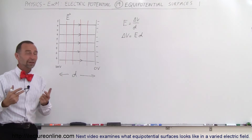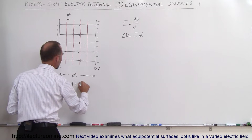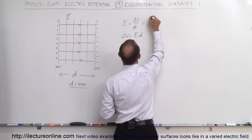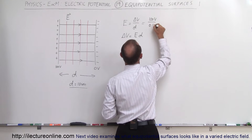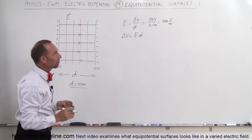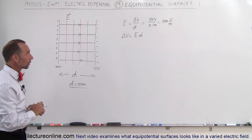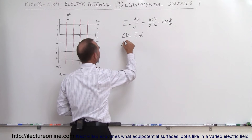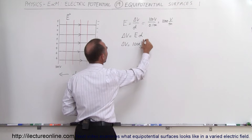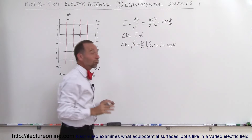That causes this to be a hundred volts based upon that electric field strength. Let's say that d is equal to 10 centimeters. In that case, a hundred volts divided by 0.1 meter equals 1,000 volts per meter. That's the strength of the electric field — for every meter traveled between those two plates the potential will change by 1,000 volts. Or: the change in potential equals 1,000 volts per meter times 0.1 meter, which equals 100 volts.